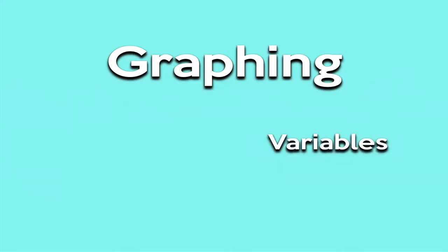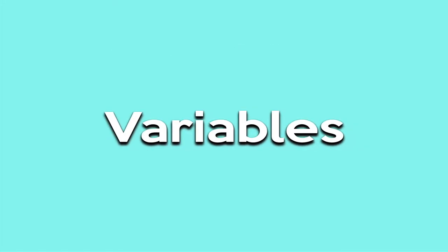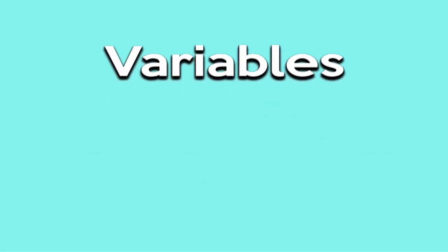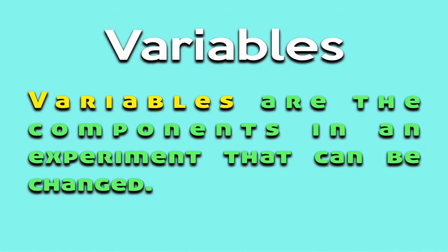So let's look at variables first. In a graph, the graph will express the relationship between two or more variables. For what we're dealing with, we will always be looking at two variables only. As you get into more advanced sciences, you'll see graphs that have three variables or more. Now, variables are the components in an experiment that can be changed.